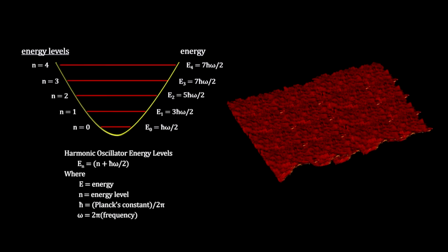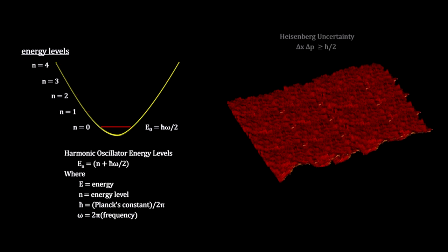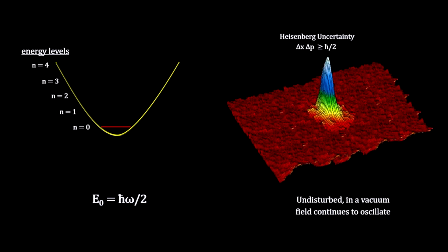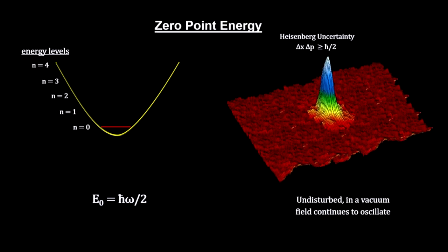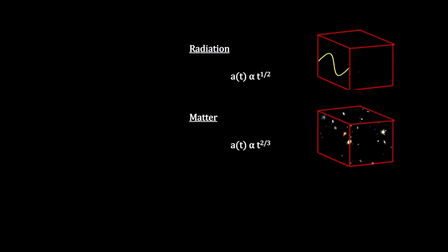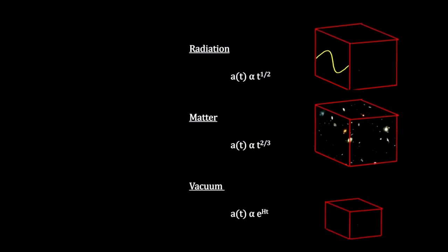We model the waves in these fields as quantum harmonic oscillators. And, given the Heisenberg uncertainty principle, the zero point energy for any wave in the field must be greater than zero. We have seen that radiation and matter in the universe are diluted as space expands. But zero point vacuum energy does not dilute. In fact, the total amount of vacuum energy increases as the volume of the universe increases.